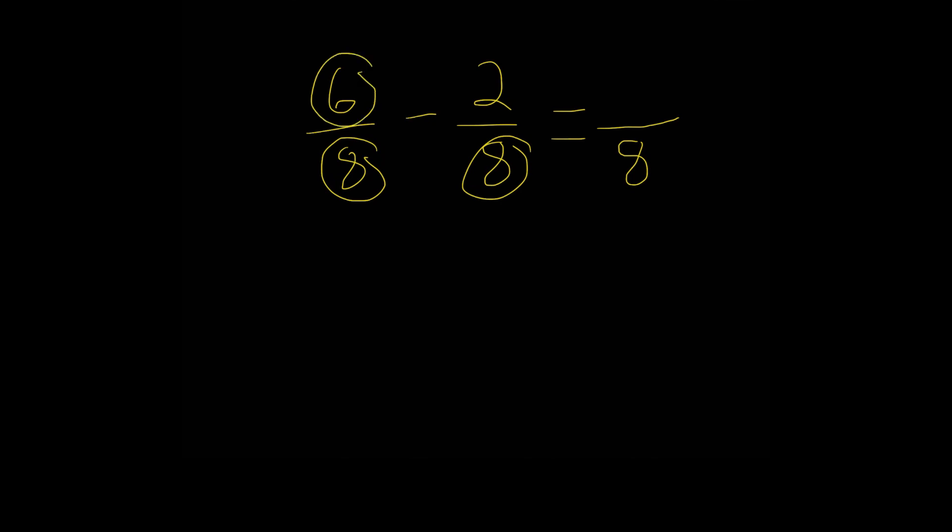And now let's find our numerator. Well, remember, we just subtract our two numerators here, 6 minus 2, and that would give us 4.